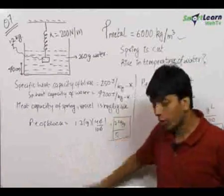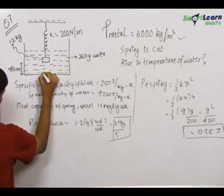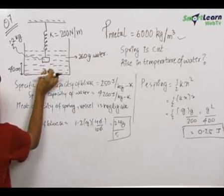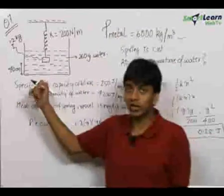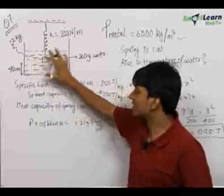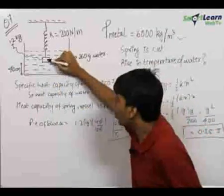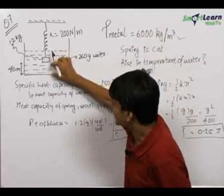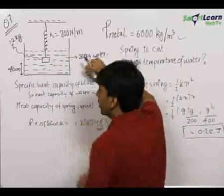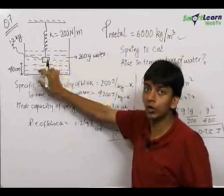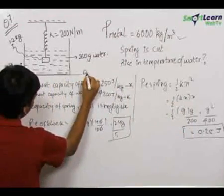The important point which most students miss: as this block goes down, there is a block of water that was previously occupying that position which now rises. Whenever there is a block inside water falling by a certain height, the block goes down by distance x, and an equivalent volume of water that was at that position moves upward. So there is also a rise in potential energy of water which you must account for.